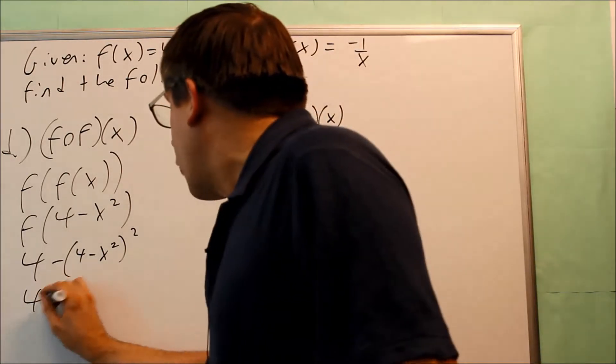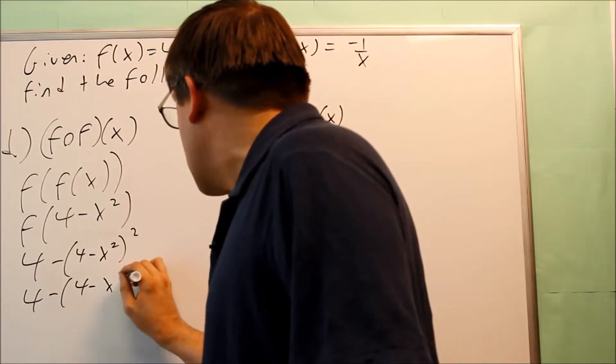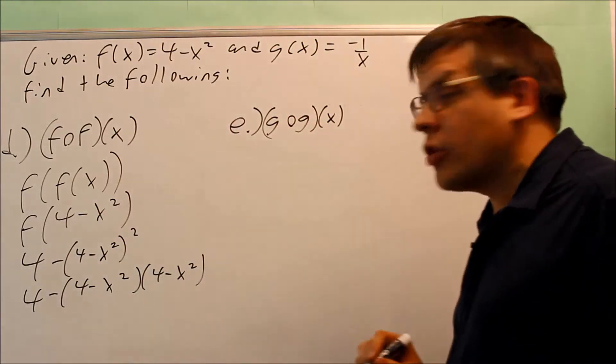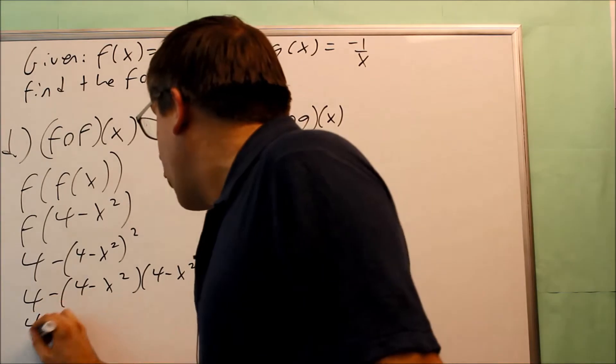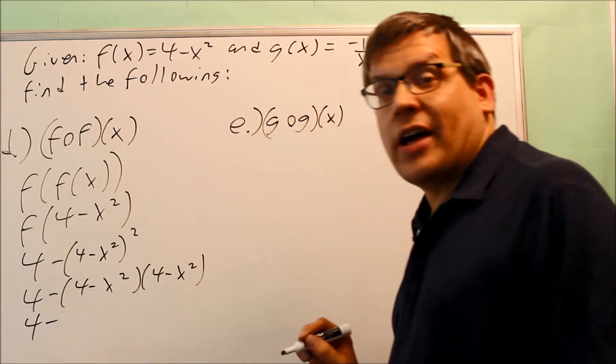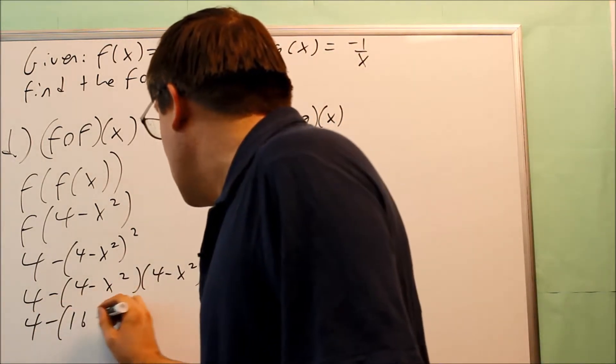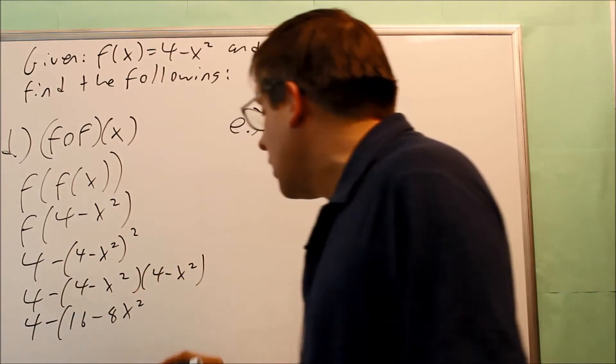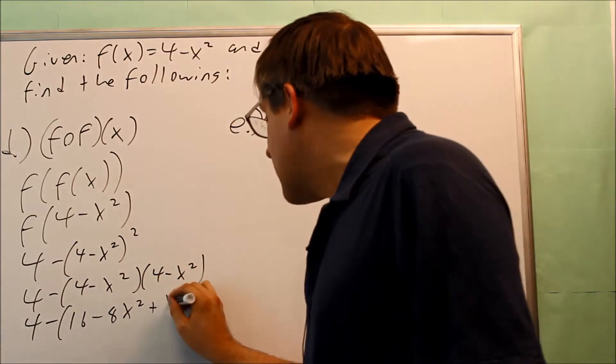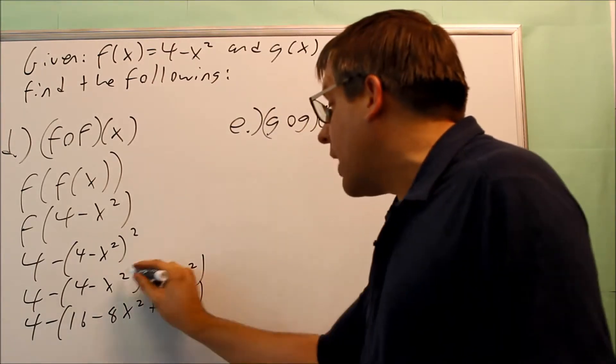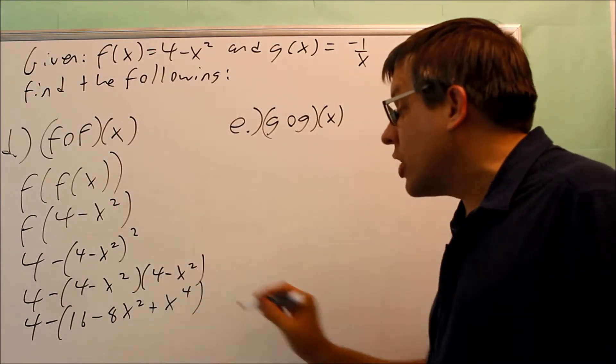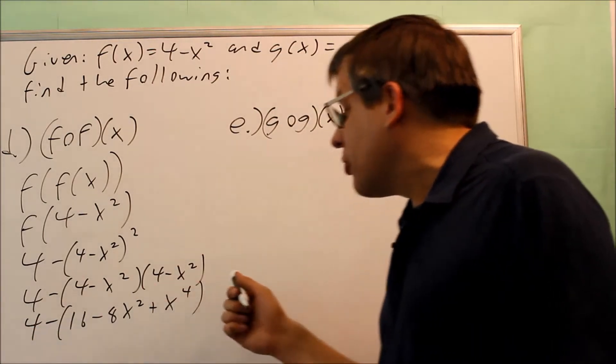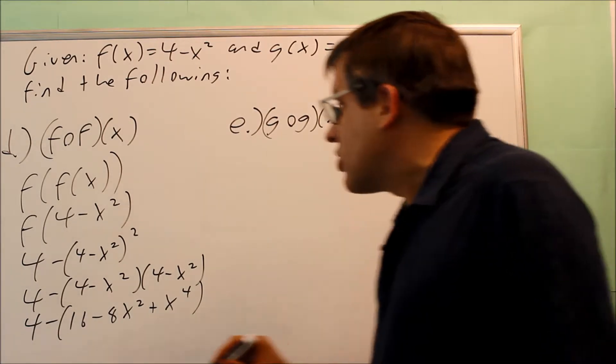So what is that? That really means 4 minus 4 minus x squared times 4 minus x squared. I'm multiplying both those out because I have the square that's there. So I have 4 minus. I'm going to multiply all that out. I get 16. I get minus 4 and minus 4. That's minus 8x squared. Negative, negative gives you a plus. That's x to the fourth power because you're adding the exponents there. 2 plus 2 will give you 4. The final thing you're going to do is you're just going to distribute the minus sign and put your like terms together.